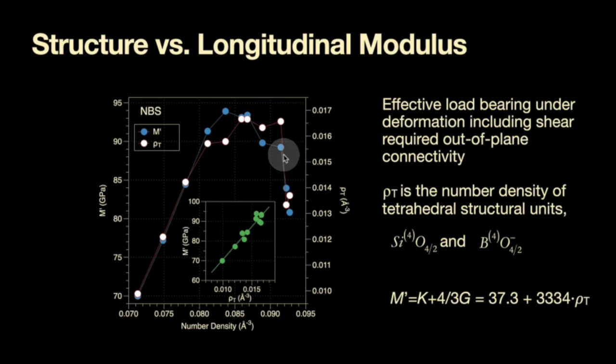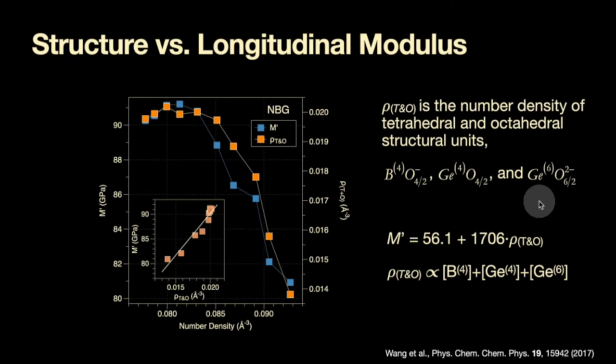And you can also establish the correlation, you can then write a linear correlation between those as a function that has some numbers here and this density of tetrahedrally coordinated structural units reflects the quantity of these units. And so we apply that now also for the borogermanates and what we have to do is we find a similar correlation. So it's not perfect but you still have a decent correlation, you have in the end again a linear relationship that has a high correlation coefficient in it and in this case we have boron 4, germanium 4 and germanium 6 as the highly coordinate species that would contribute to the elastic modulus that involves shear deformation, so the longitudinal modulus.